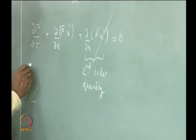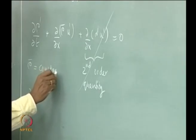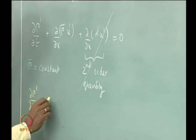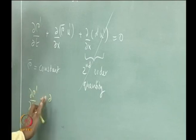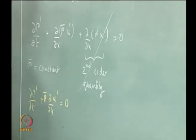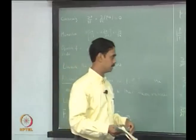Let me say rho bar equals constant. This would be the perturbation equation for the continuity equation — the acoustic equation for continuity. We need to do the same procedure next with the momentum equations.